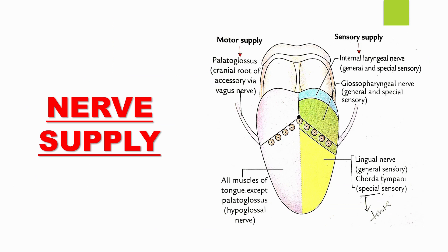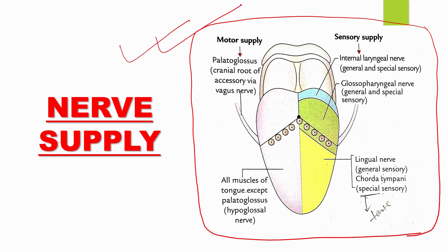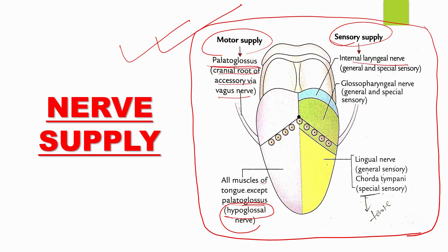You can draw this diagram and mention the names of the nerves — it is sufficient for an answer on nerve supply of the tongue. The motor nerve supply includes the palatoglossus nerve via the cranial root of the accessory via the vagus nerve. All other muscles of the tongue are supplied by the hypoglossal nerve. Sensory supply includes the internal laryngeal nerve, glossopharyngeal nerve, lingual nerve, and chorda tympani.